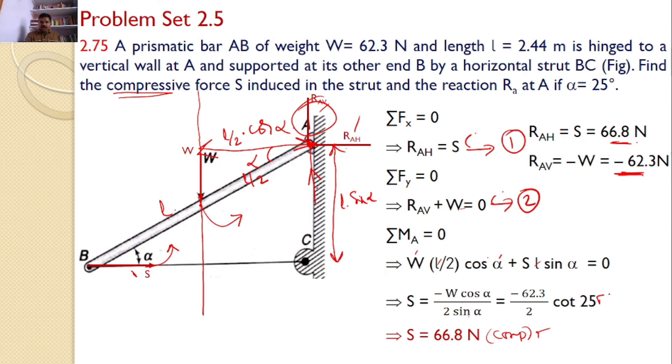Now you know RAH and you know RAV. Hence you can find the reaction at A which acts like this and the magnitude is given as root of RAH square plus RAV square and it gives the value 91.34 newtons.